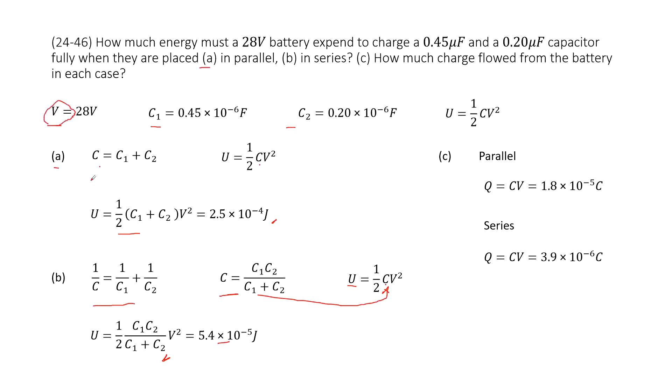Now in the first case, we can see this is a parallel connection. The equivalent capacitance is just C1 plus C2. So you input C equal to C1 plus C2 times V, you get it there.